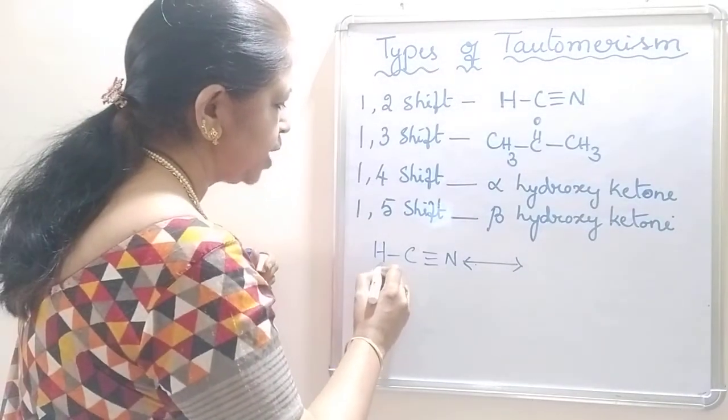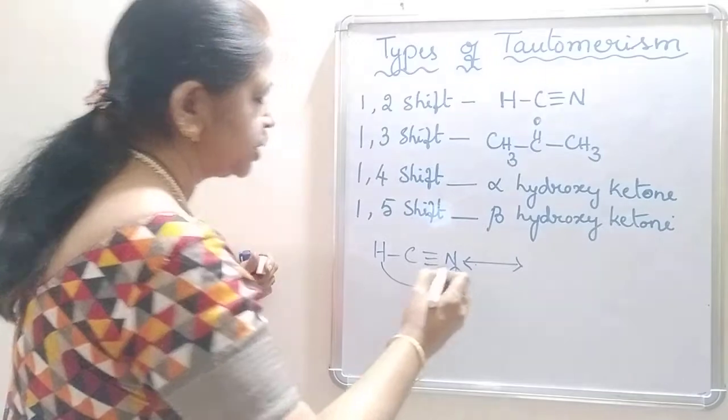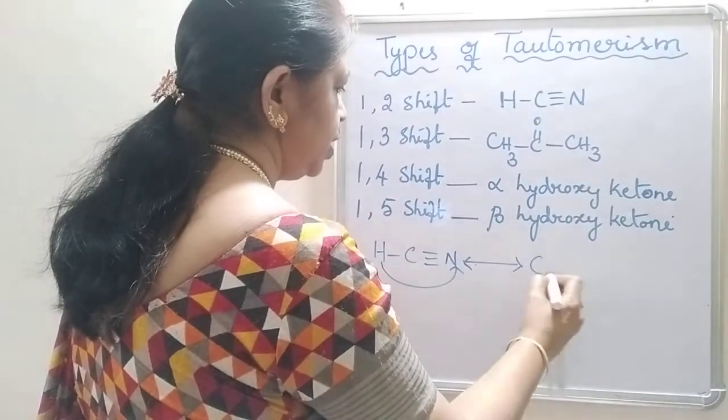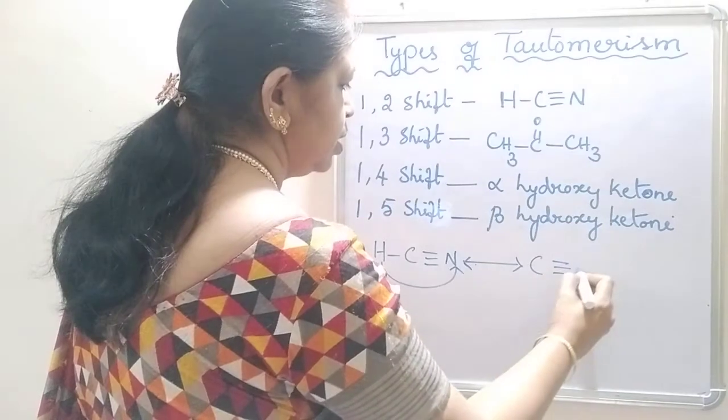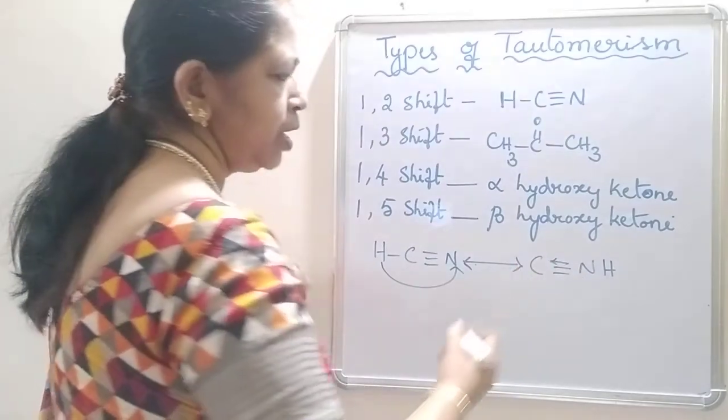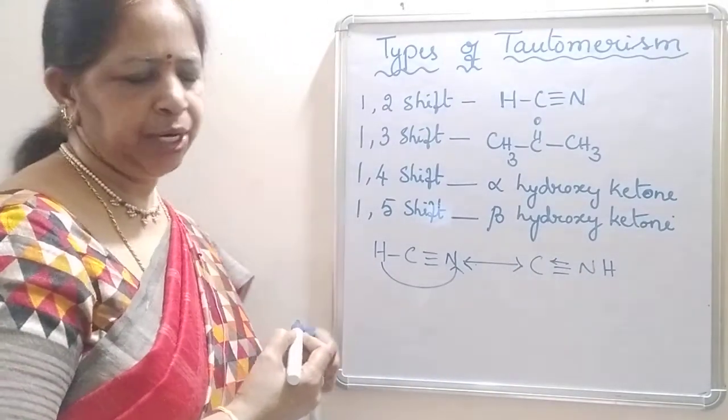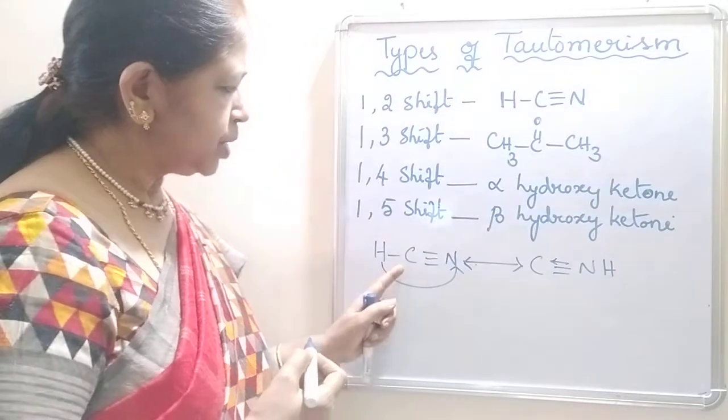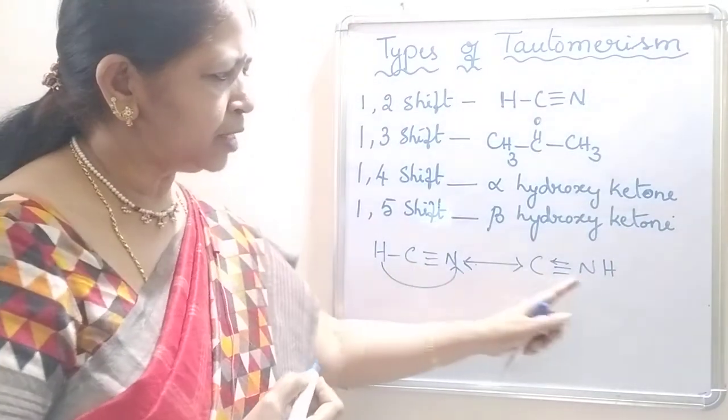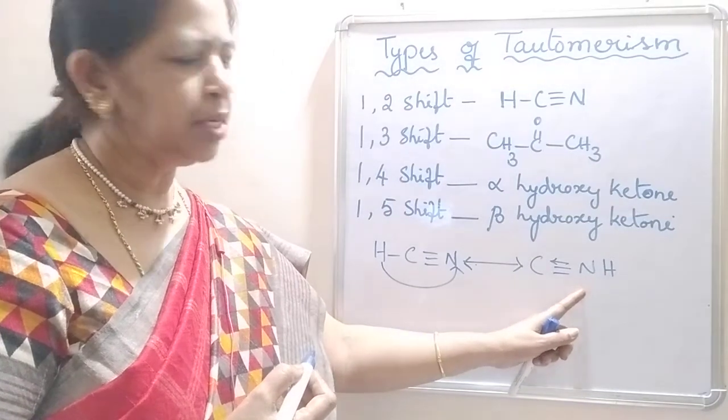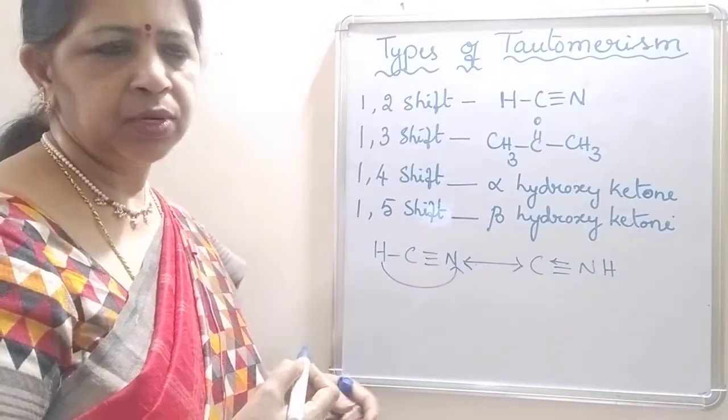Here this hydrogen will migrate towards the nitrogen. So C-NH and here one bond becomes a coordinate covalent bond. This is hydrogen cyanide, this is hydrogen isocyanide.